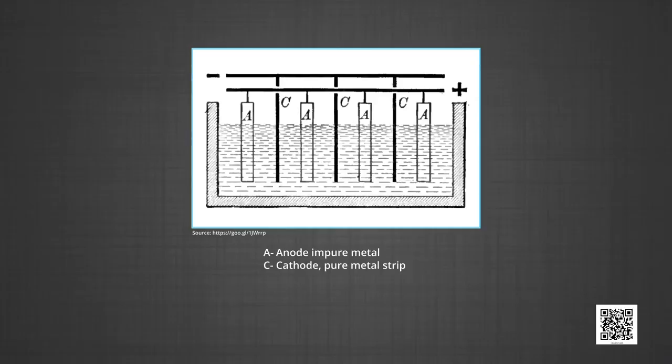Next process is electrolytic refining. In this method, the impure metal is made to act as the anode. A strip of the same metal in pure form is used as cathode. They are put in a suitable electrolyte bath containing a soluble salt of the same metal. The more basic metal remains in the solution and the less basic one goes to the anode and drops as anode mud. This process is also explained using the concept of the electrode potential, over potential and Gibbs energy, which you have studied previously.